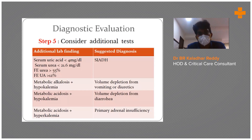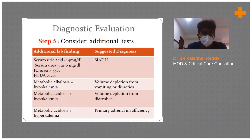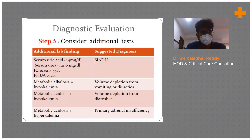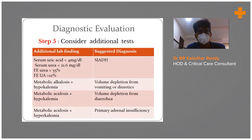Consider additional tests if you suspect SIADH. The diagnostic criteria for SIADH include major criteria: serum uric acid less than 4, serum urea less than 21.6, fractional urea excretion more than 55%, and uric acid excretion more than 12%. Other basic criteria include elevated urine osmolality, euvolemic patient, and hyponatremia.